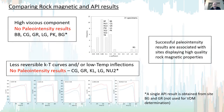Comparing our rock magnetic results and paleointensity results, we find good agreement: all sites showing high viscous components yield no paleointensity results, and sites with less reversible Kt curves and/or low-temperature inflections also yield no paleointensity results. Successful paleointensity results are associated with sites displaying the highest quality rock magnetic properties.